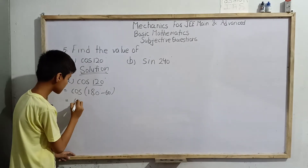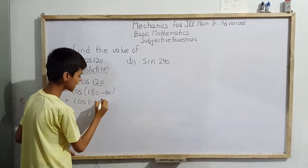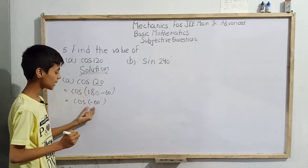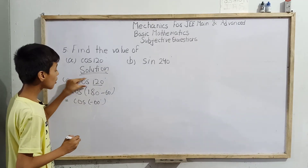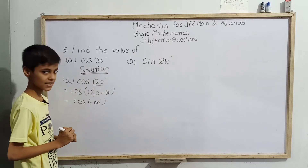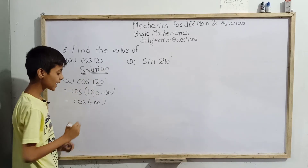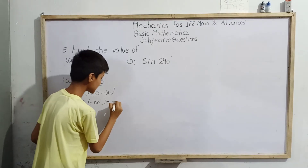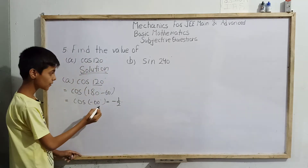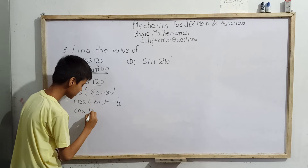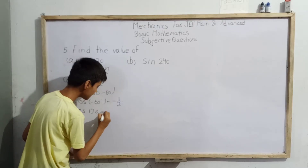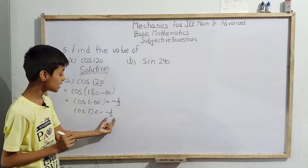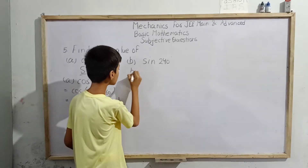So cos 120° equals −cos 60°. We know cos 60° = 1/2, and cos(−60°) in this context gives us −1/2. Therefore, cos 120° = −1/2. That is the answer for part (a): cos 120° = −1/2.